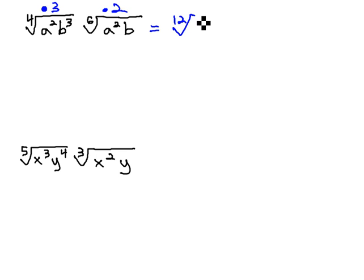This puts everything under a twelfth root. For the a's, 2 times 3 is now a to the sixth, and for the b's, 3 times 3 is now 9. For the second radical, on the a's, 2 times 2 is 4, and for the b's, 2 times 1 is 2.